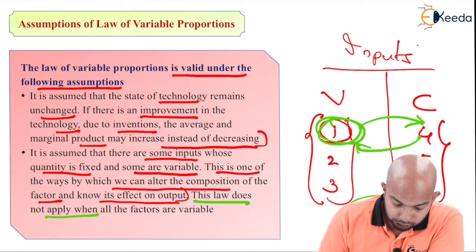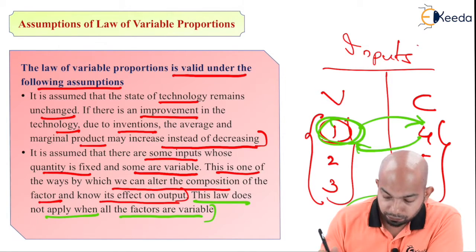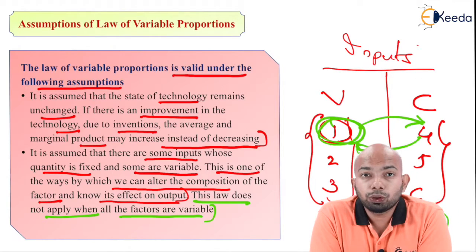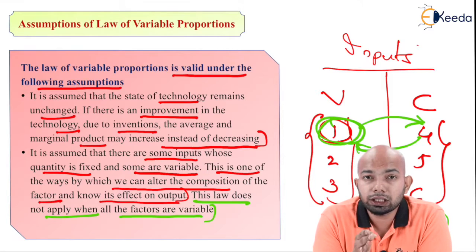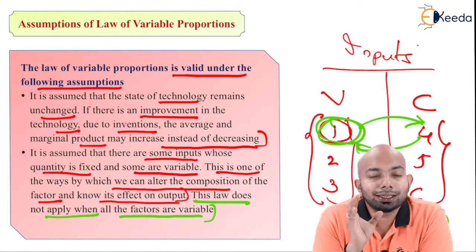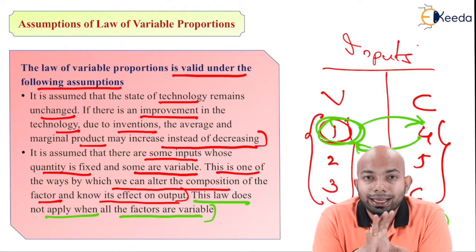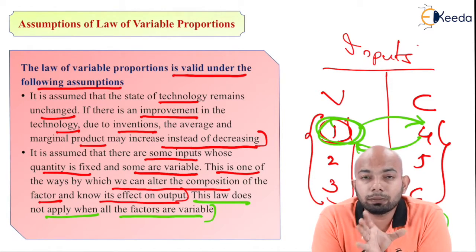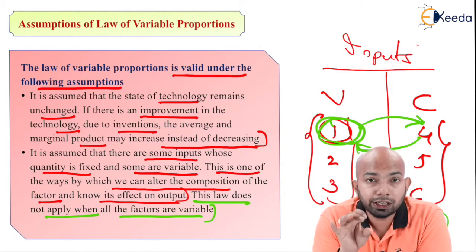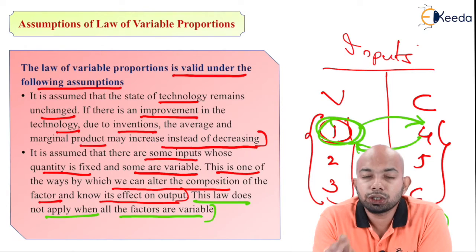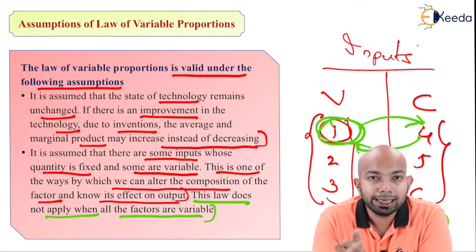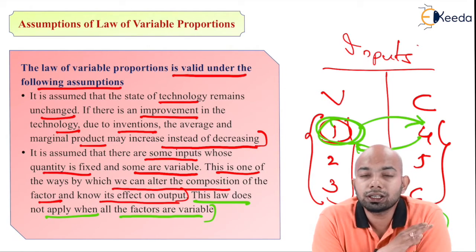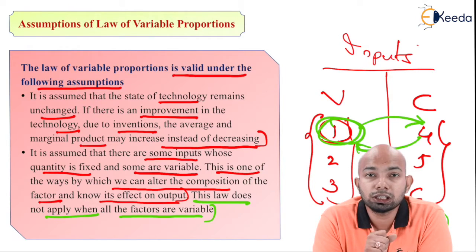This law does not apply when all the factors are variable. The law of variable proportion will never work if you put all factors under the variable group. There has to be certain constant factors. Hence, the law demands that one factor is variable and every other factor is fixed. If you put all factors under one group, it will never work.